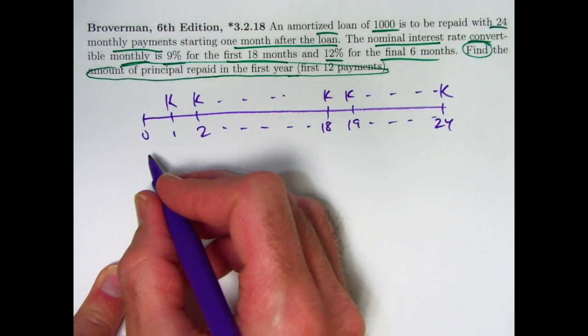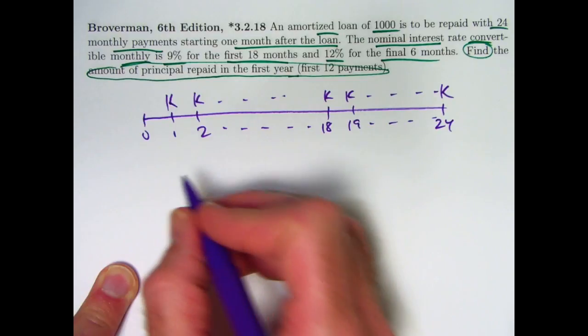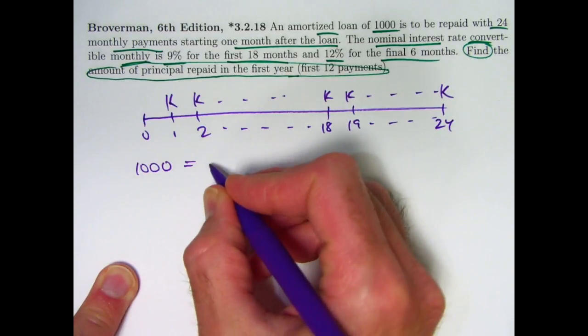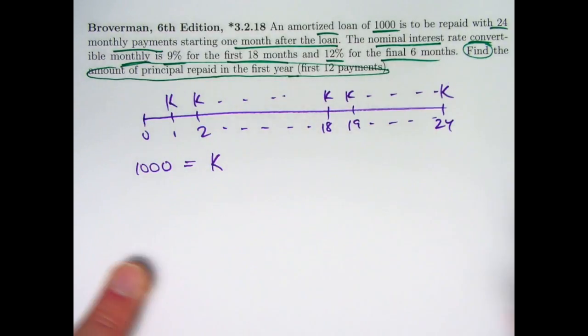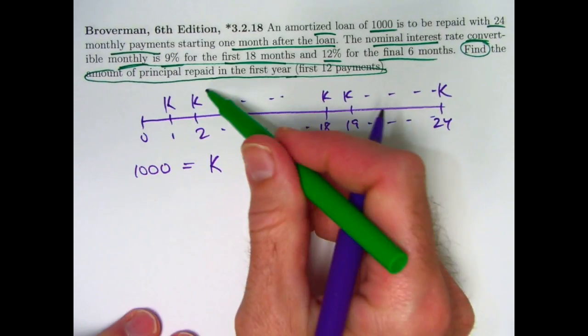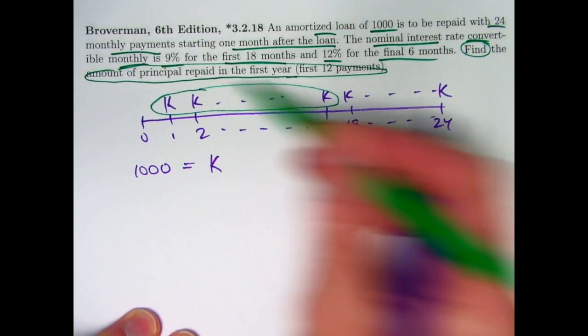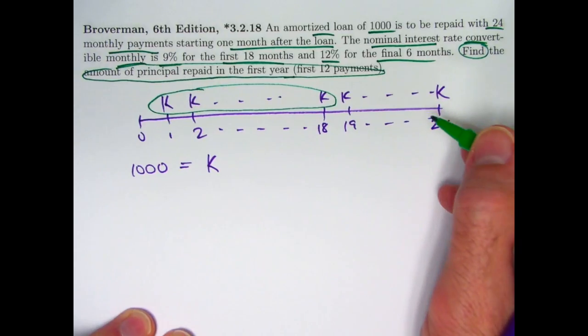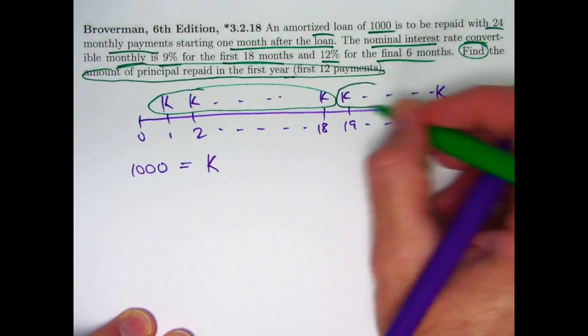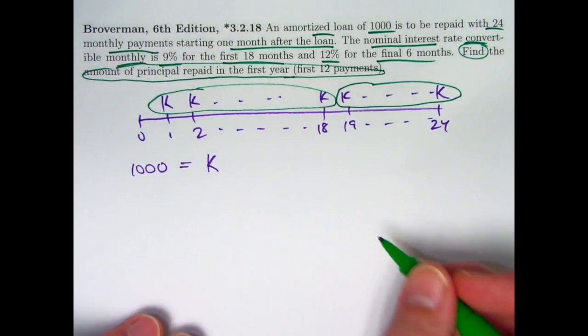The present value of the stream of payments is the same as the loan amount. That's our basic principle to determine the payment K. You can break the stream up into the first 18 payments that have the 9% interest rate convertible monthly, and the last six that have the 12% interest rate convertible monthly.